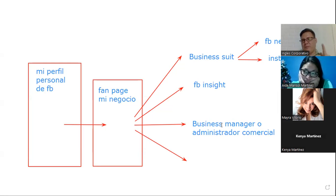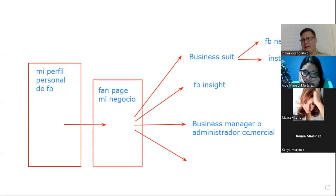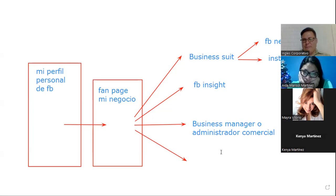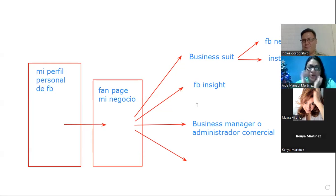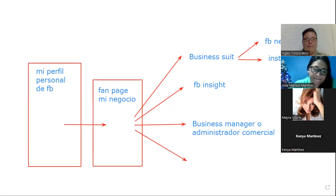Hay dos maneras de entrar al Business Manager: una es entrar a la fanpage, de ahí ir al Business Suite y del Business Suite ir al Business Manager. La otra manera es entrar directamente buscando esta aplicación en Google. A mí me gusta más esta porque voy directo. ¿Y qué es lo que me pide? Pues me pide el login y el password que ocupo en mi perfil personal.